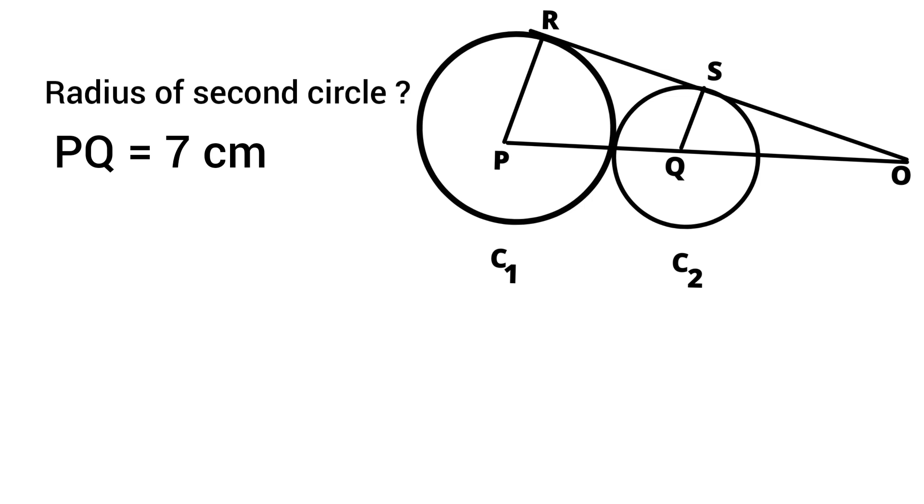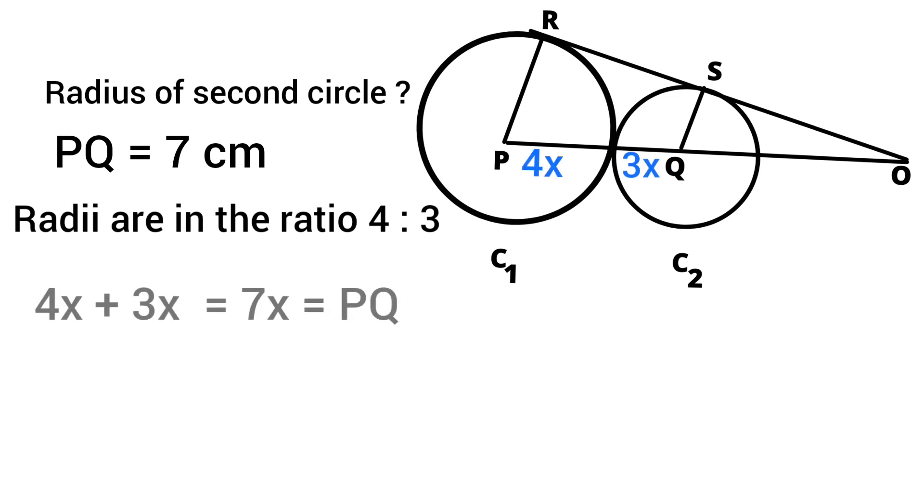Now let's say both circles are of radius 4X and 3X. Now 4X plus 3X equals 7X, which equals 7. Then X equals 7 by 7, which equals 1.